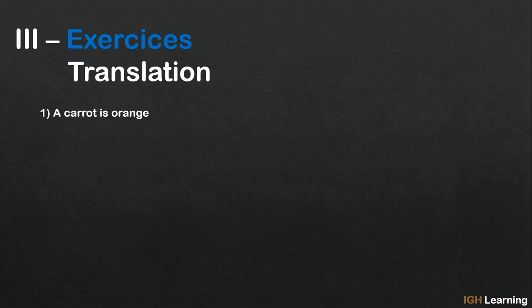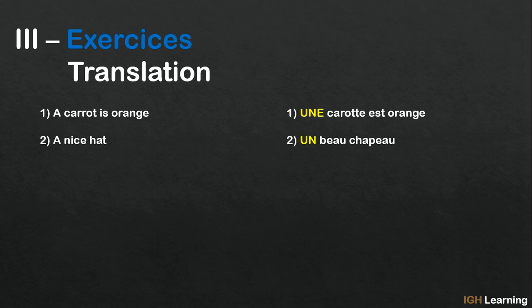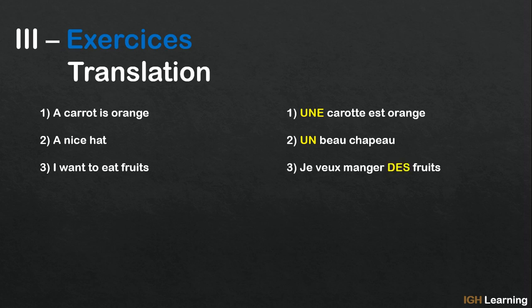Now to finish, some exercises — translation. First one: 'A carrot is orange.' In French we say: une carotte est orange. Second one: 'A nice hat.' In French: un beau chapeau. Third one: 'I want to eat fruits.' In French: je veux manger des fruits.